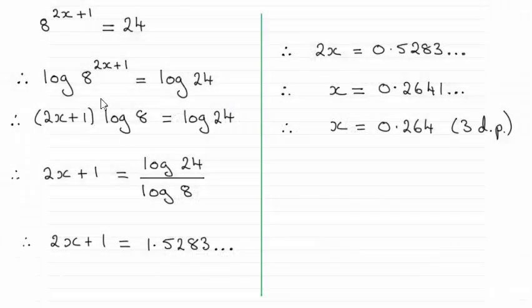Hi there, this is quite a common question where we're asked to solve an equation that in this case is 8 to the power 2x plus 1 equals 24, giving x to three decimal places. And you can see the answer then is x equals 0.264.